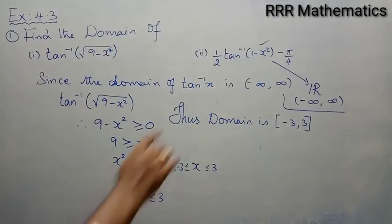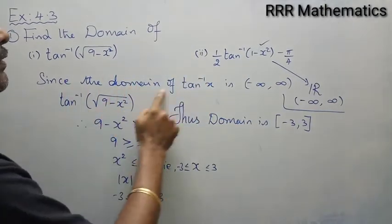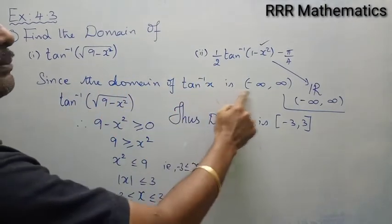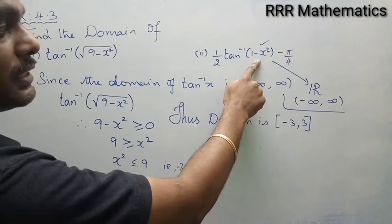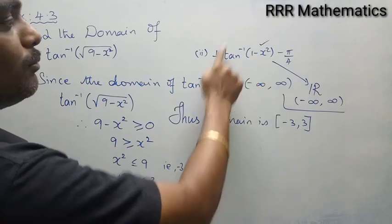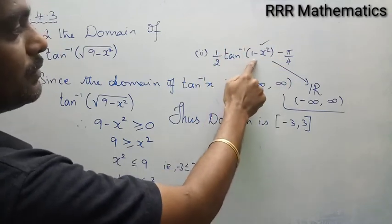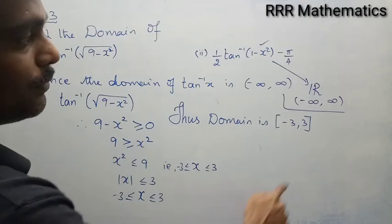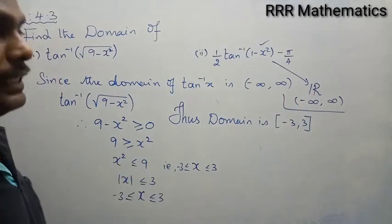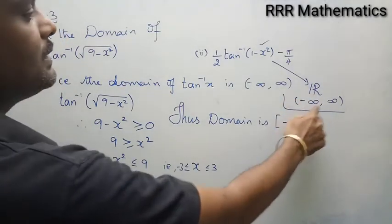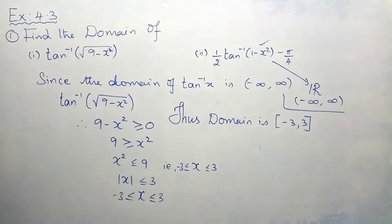So for option number 2, since the domain of tan inverse x is minus infinity to plus infinity, there is no restriction. Therefore the domain of half times tan inverse of 1 minus x squared minus 5 by 4 is all real numbers, that is the open interval minus infinity to plus infinity. Got it?